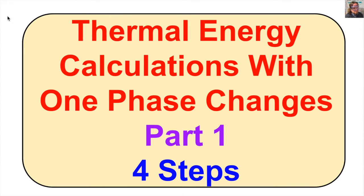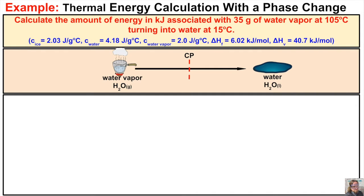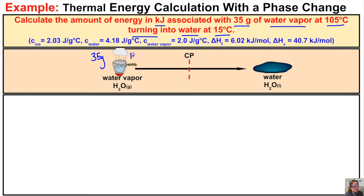Let's take a look at the very first example. It says to calculate the amount of energy in kilojoules associated with 35 grams of water vapor at 105 degrees Celsius turning into water at 15 degrees Celsius. I like to draw a little picture of what's going on whenever we have a phase change. We have some water vapor here with a mass of 35 grams at 105 degrees Celsius.